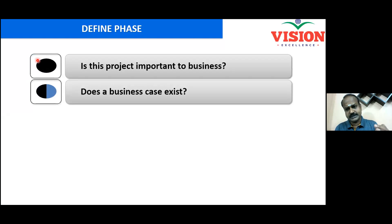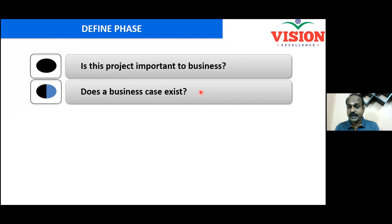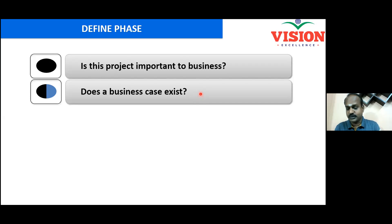Does a business case exist? You expect resources to be provided — let's say 25 lakhs is required to run your project for the next six months. If I invest 25 lakhs, what is in it for me? That is called the business case. If you can say, 'Sir, you will get 40 lakhs saving every quarter — 1.6 crore saving every year, recurring saving, and the investment required is 25 lakhs' — then a business case exists and the chance of getting approved will be higher.